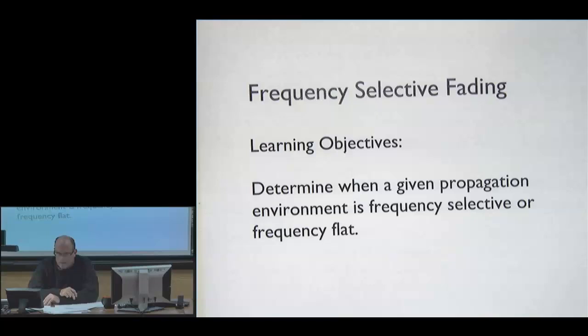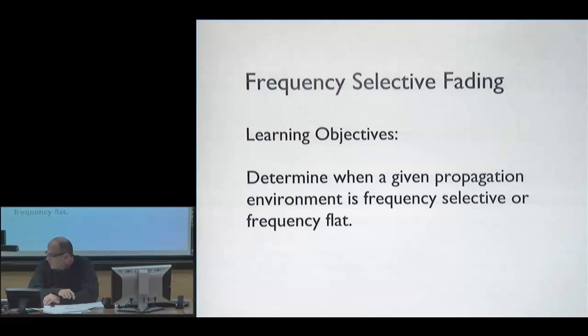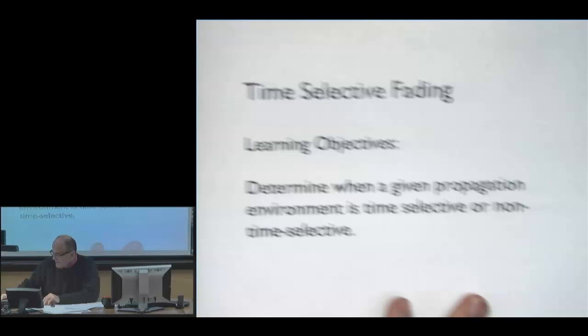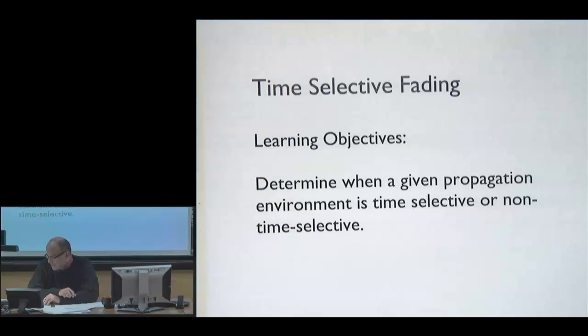Second, we're going to go into detail on two kinds of fading. One is frequency-selective fading — you should be able to determine when a given propagation environment is frequency-selective or flat. Similarly for time-selective fading, determine when a given propagation environment is time-selective or non-time-selective, which is essentially time-invariant or time-varying. The choice of small-scale fading environment determines the appropriate kind of signal processing model we use.